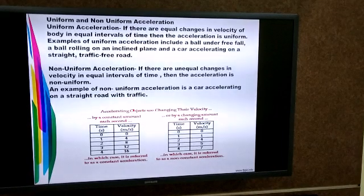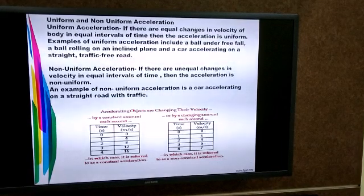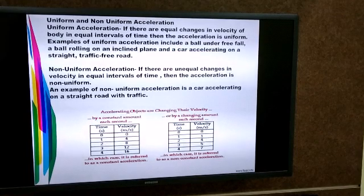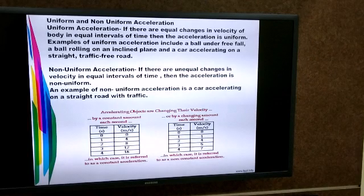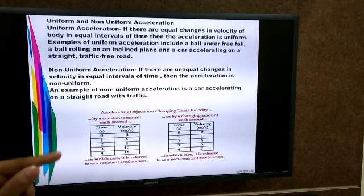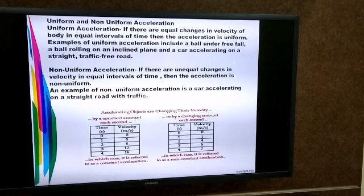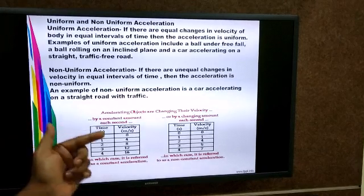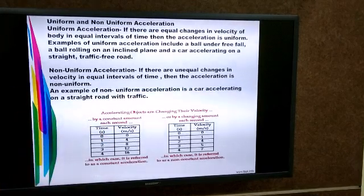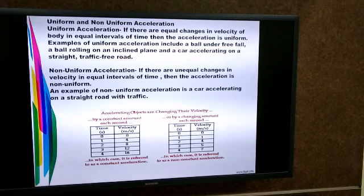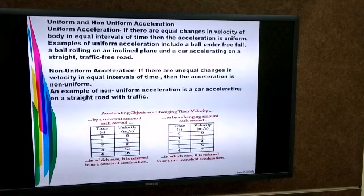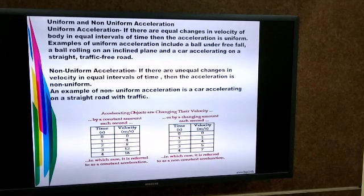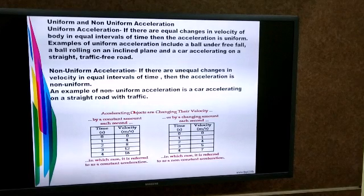If you consider the difference between consecutive velocities: 1 minus 0 = 1 m/s; 4 minus 1 = 3 m/s; 5 minus 4 = 1 m/s; 7 minus 5 = 2 m/s. There are unequal changes in velocity in equal intervals of time.